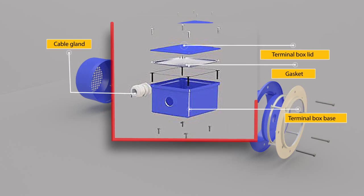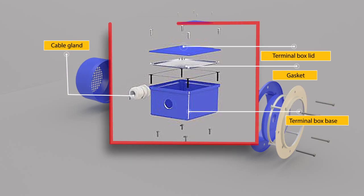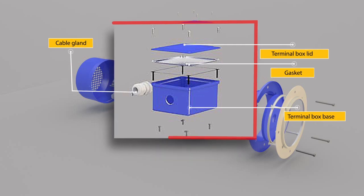The terminal box allows the power cable to be fixed with the cable gland to provide powering of the induction motor. Terminal box consists of screws, terminal box lid, gasket, terminal box case and cable gland.